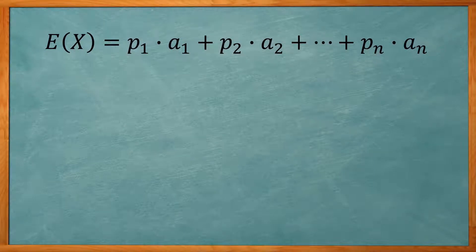Here's the formula for expected value. E of x, the expected value, is equal to P1 times A1 plus P2 times A2, plus dot dot dot, all the way to Pn times An. N can be the one-hundredth one, the one-thousandth one, the tenth one, or whatever it goes up to.